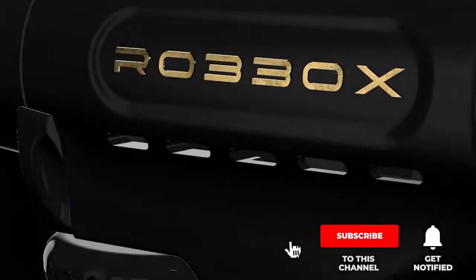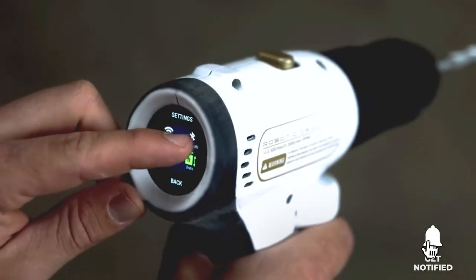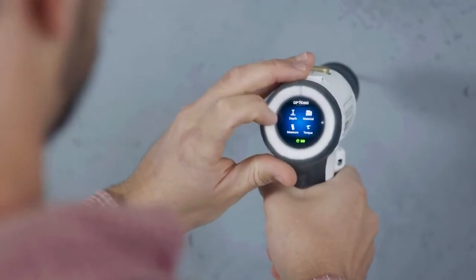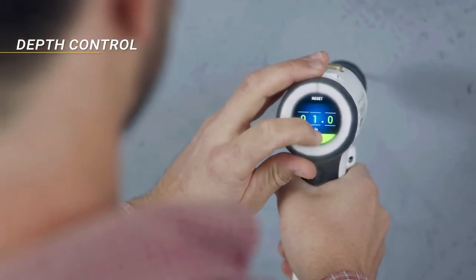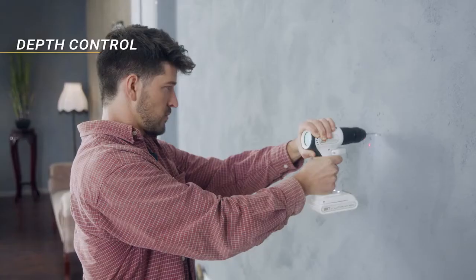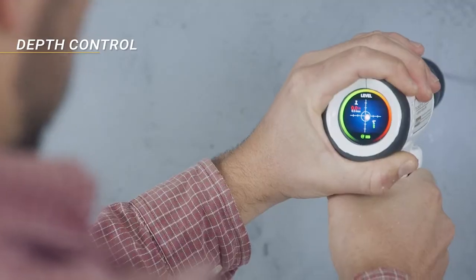Then our imagination came up with auto set features. A smart drill allows for that. First, there's depth control. Set up how many inches or centimeters you want to go into the wall and the drill stops automatically when you reach it.